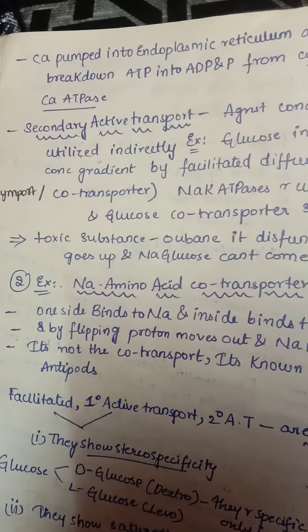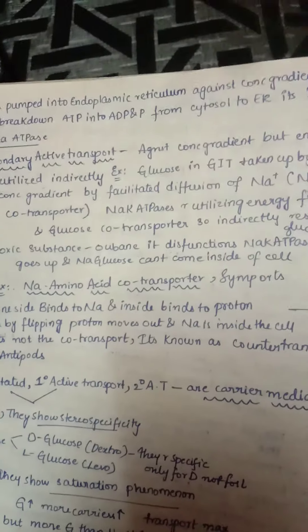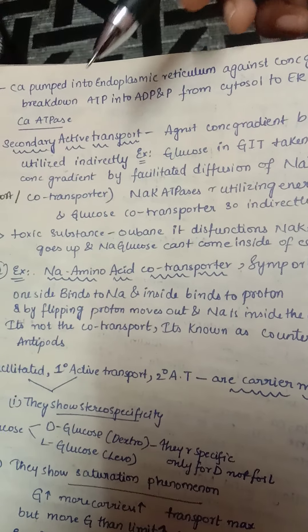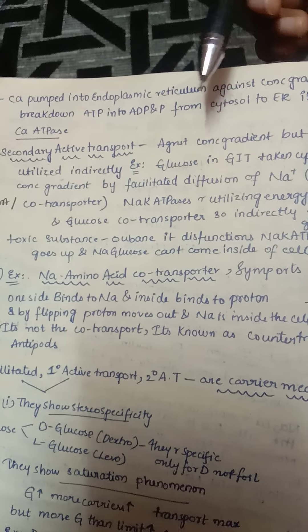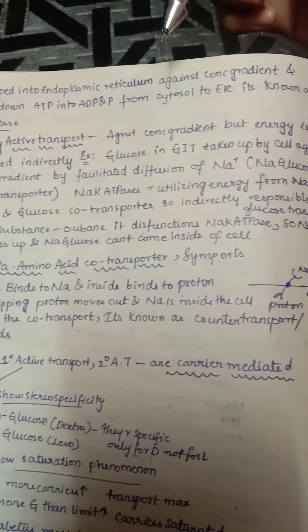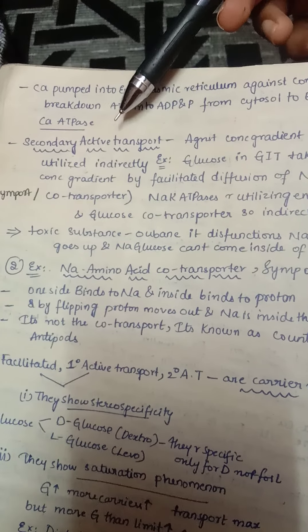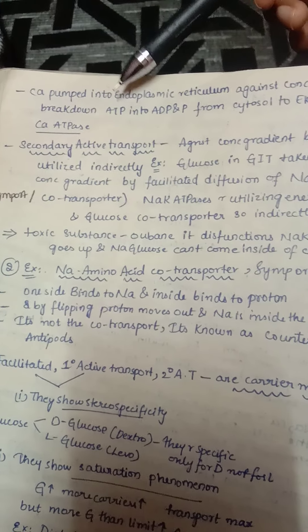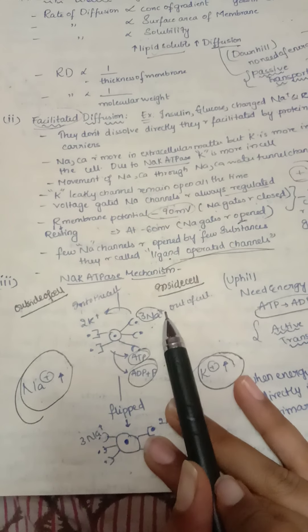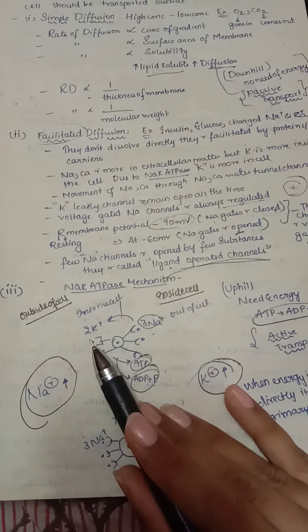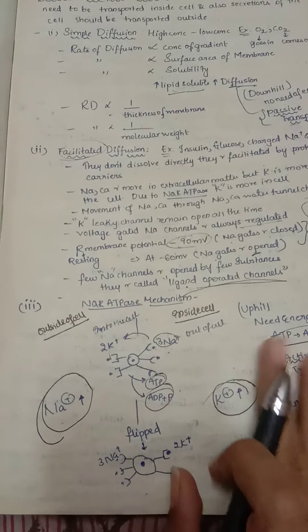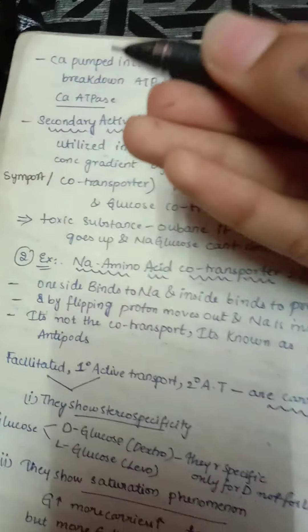Calcium is pumped into the endoplasmic reticulum against the concentration gradient. Although the ER already has a large amount of calcium, cytosolic calcium is low, so it must be pumped against the gradient. ATP is broken down into ADP and phosphate for this. This is called calcium ATPase. Similarly, the sodium-potassium pump moves both ions against their concentration gradients, using ATP, hence it is sodium-potassium ATPase.